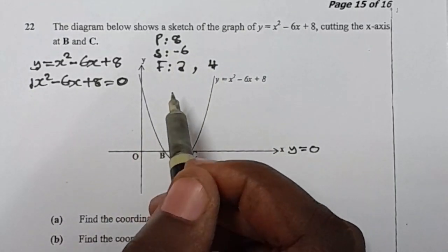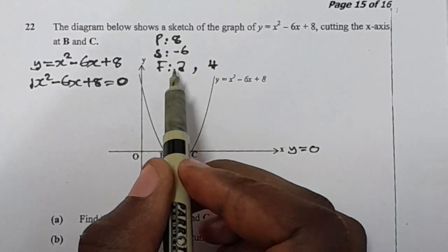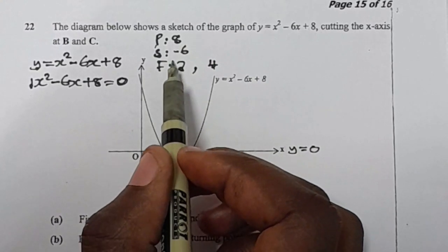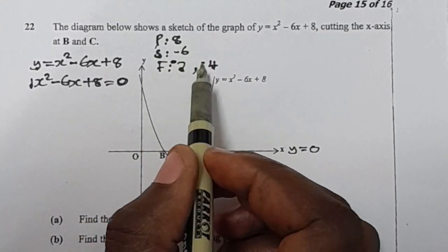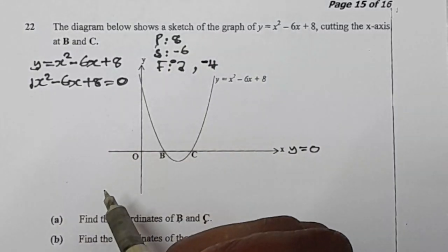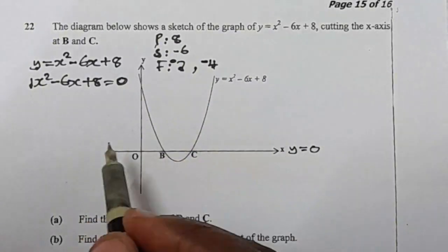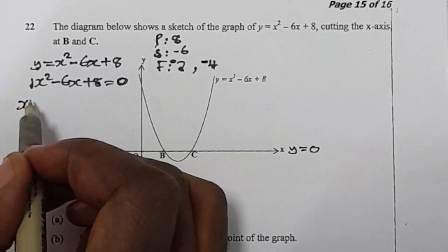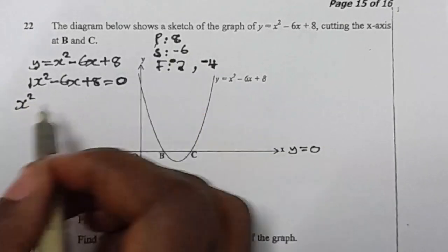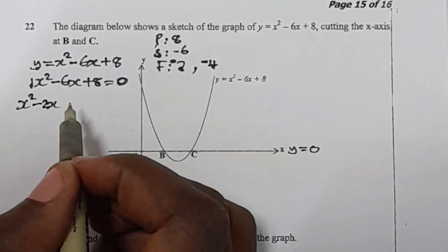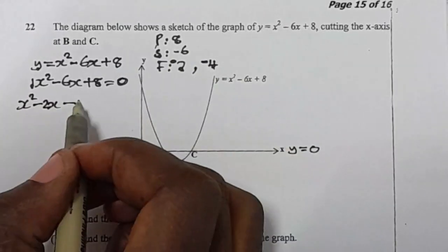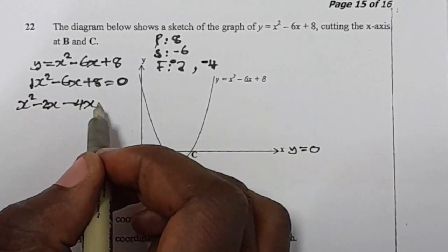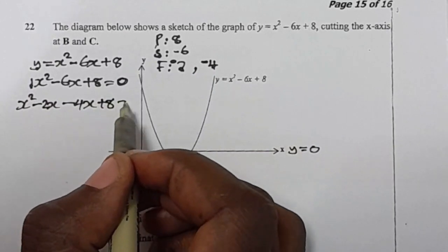What you have to know is that whenever you have a negative sum like this, it means all the two factors are going to be negative. So we are going to use those factors to solve the equation. We're having x squared, then minus 2x, then minus 4x, and then plus 8 is equal to 0.